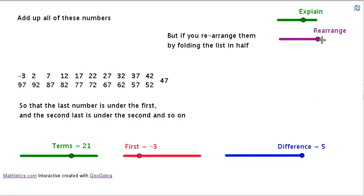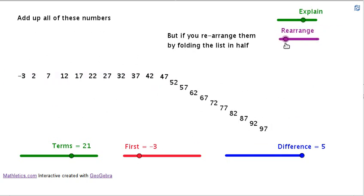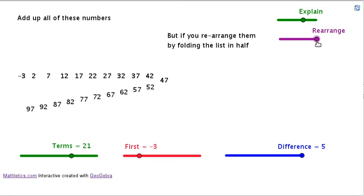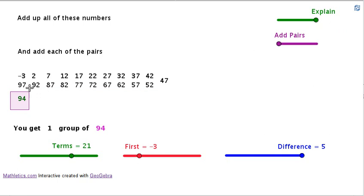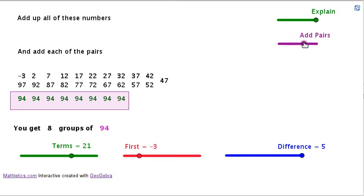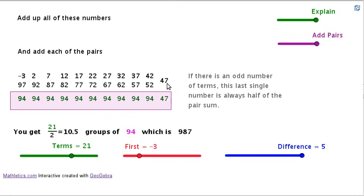We're going to rearrange them, take the list, fold it in half, and add them all up. Minus 3 and 97 is 94. Positive 2 and 92, also 94. Each of those sums adds to 94. The middle term, 47, is exactly half of 94. So we've got 10 and a half groups, half of 21, groups of 94, which is 987. You get the same number. That's where the formula comes from.